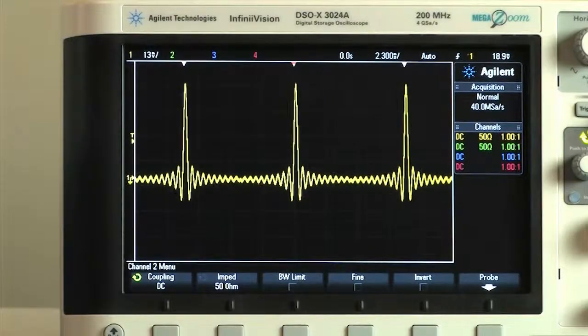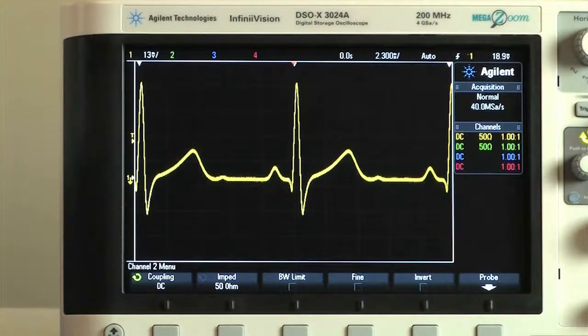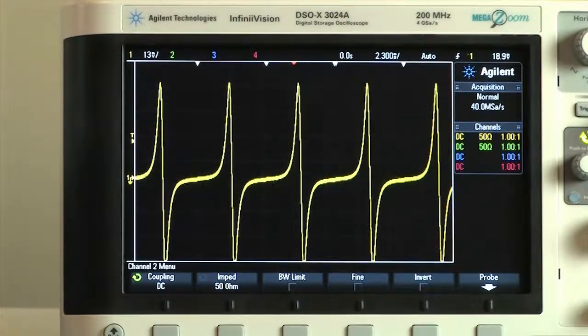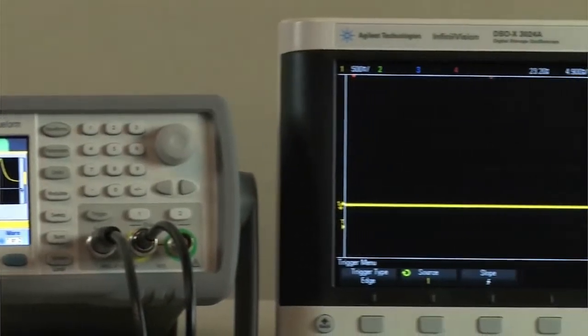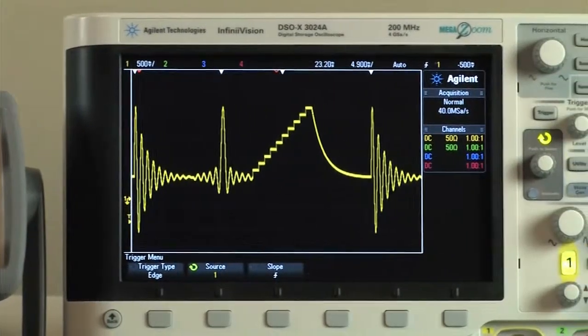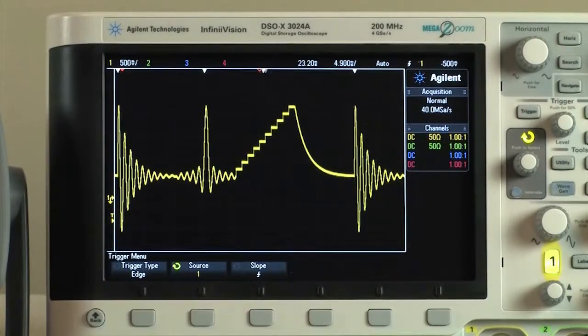With the addition of ARB, arbitrary waveforms of up to 1 million points per channel can be generated. An option increases this to 16 million points per channel. Individual arbitrary waveforms or segments can be combined into user-defined sequences to form larger, more complex waveforms.